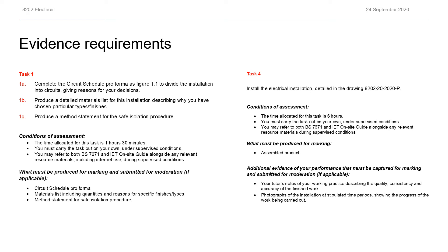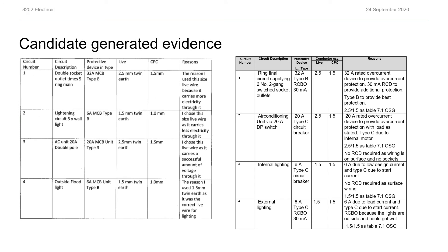Within the assessment packs, the evidence requirements are detailed under each task. Some evidence, such as that required for task one, is only candidate generated evidence and does not require any practical observation forms by the assessor. Task four, on the other hand, which is the major installation task, does require PO forms carried out by the assessor as well as photographic evidence. More details on the photographic evidence are contained in the assessor's guide part of the assessment pack. The candidate generated evidence for task one does not require any practical observation forms because the evidence really does speak for itself and assists towards marking and moderation.